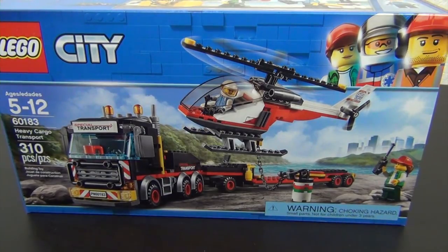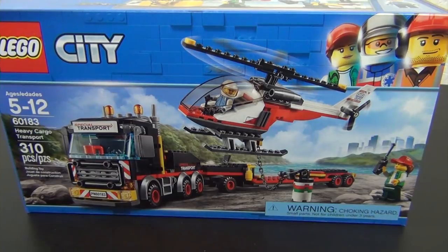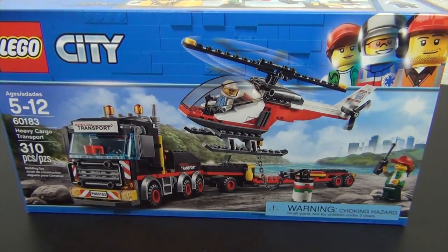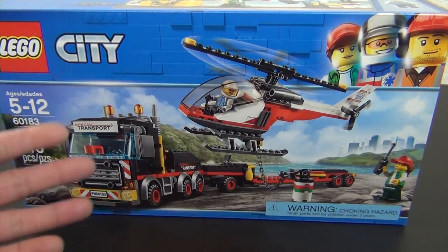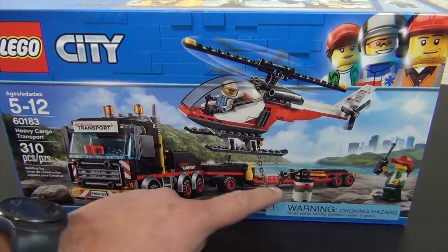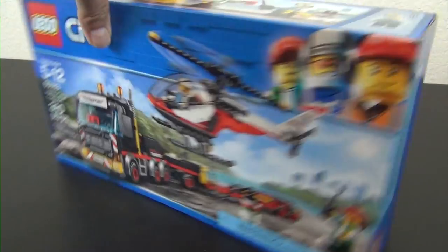Hey everyone, welcome back to The Hidden Brick where today we're going to build the LEGO City Heavy Cargo Transport Set. This is set number 60183, comes with 310 pieces. Looks like we're going to build a semi truck with a flatbed trailer and a helicopter.